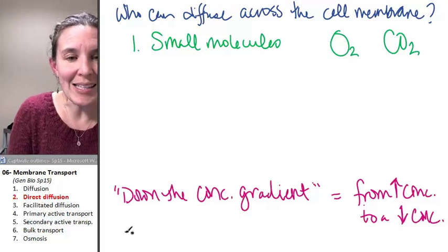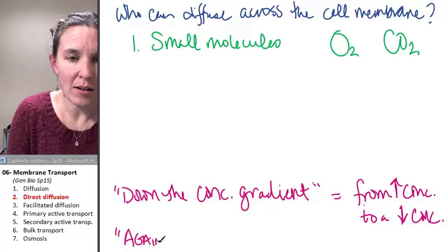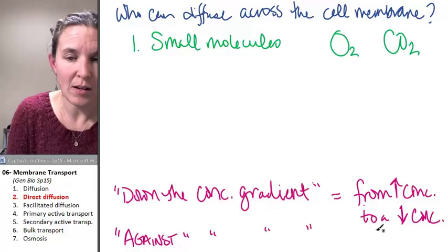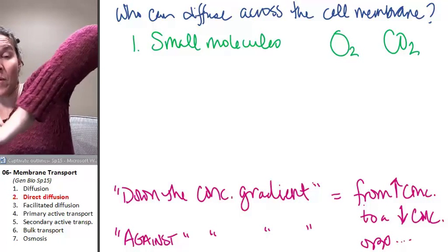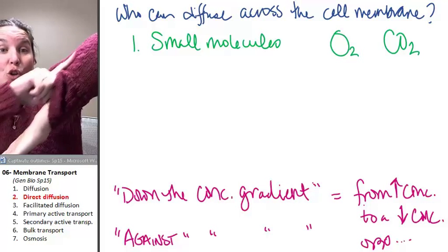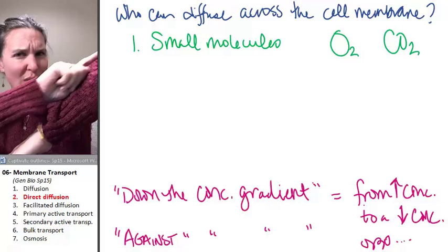If you go against the concentration gradient, then that's going to be the opposite. So if I go from a low concentration to a high concentration, molecules aren't going to do that very well.